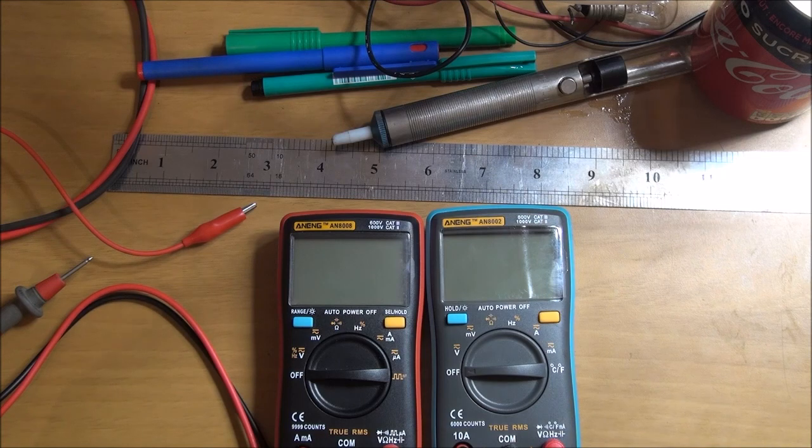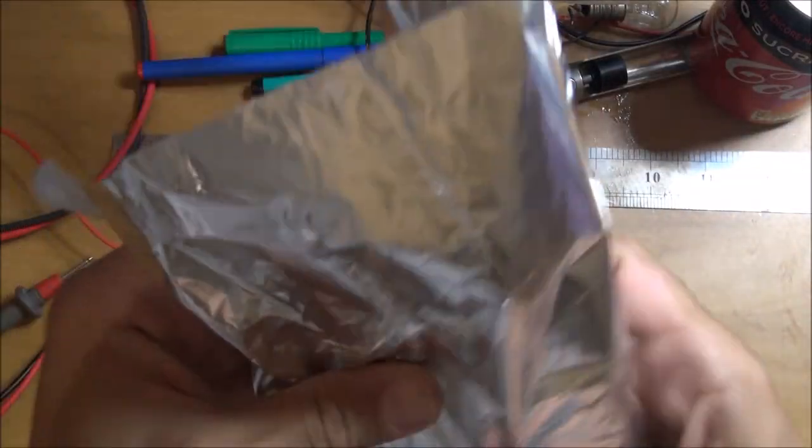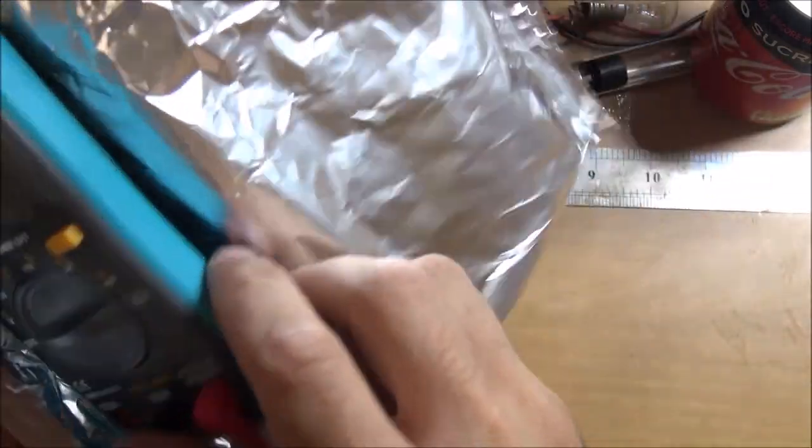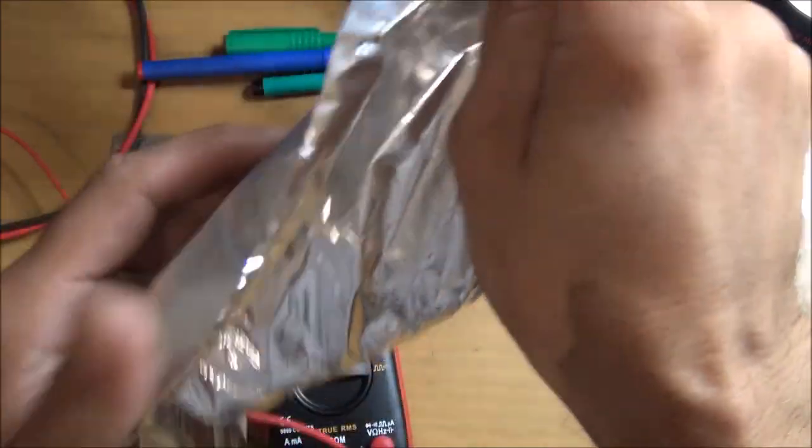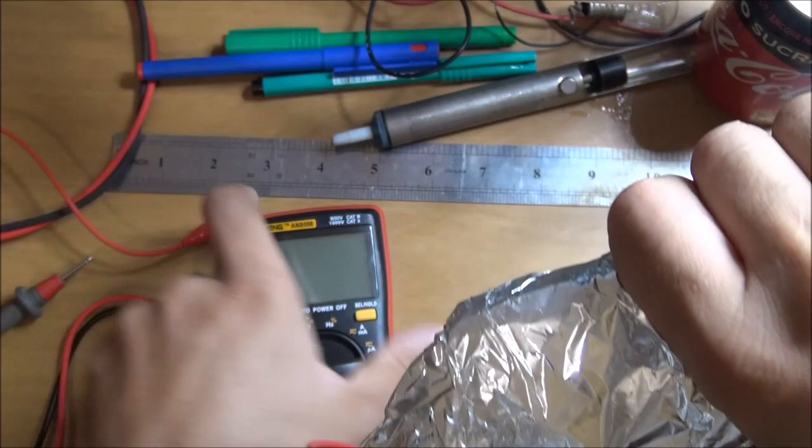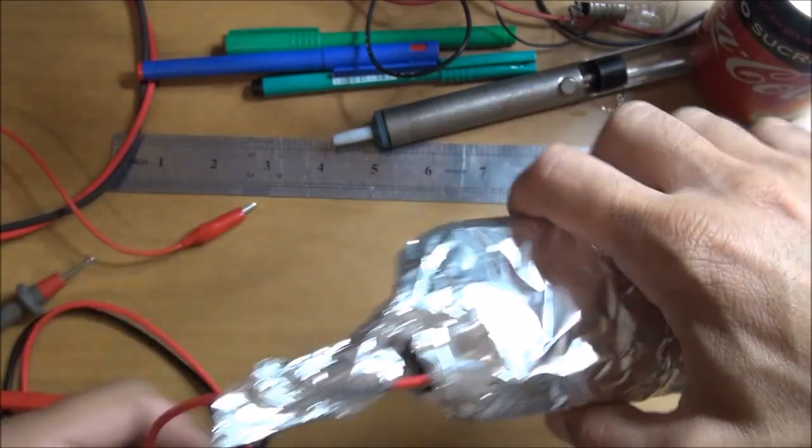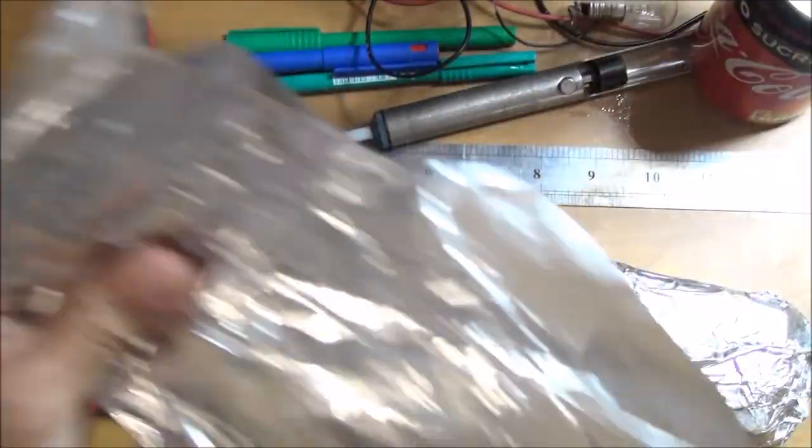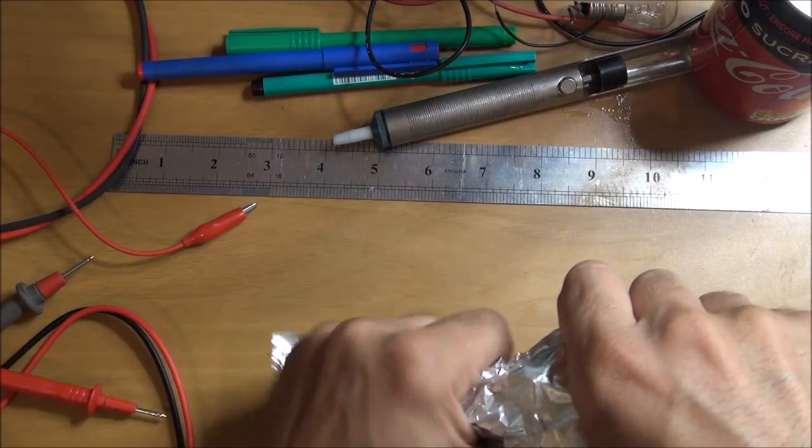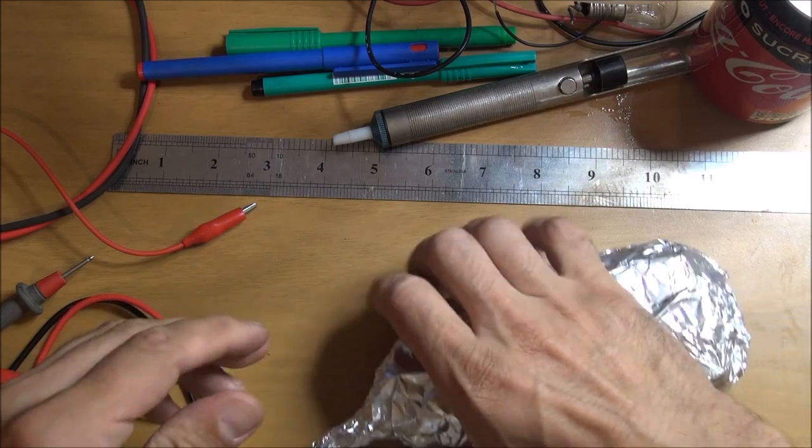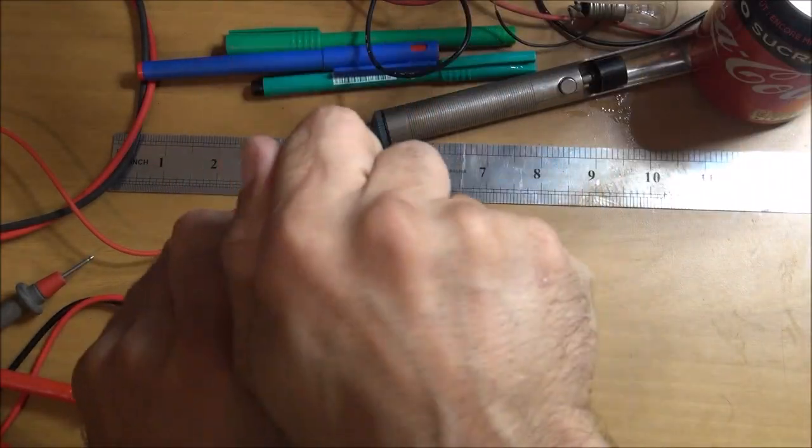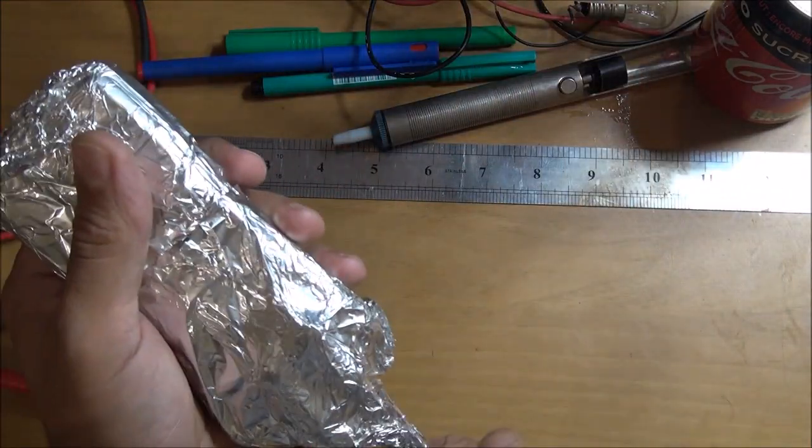So what I am going to do for my own test is to use aluminum foil like this. So take the multimeter. You need to add a little bit more. I am going to put the foil here like this. This electrical mass represents your hand around the multimeter.